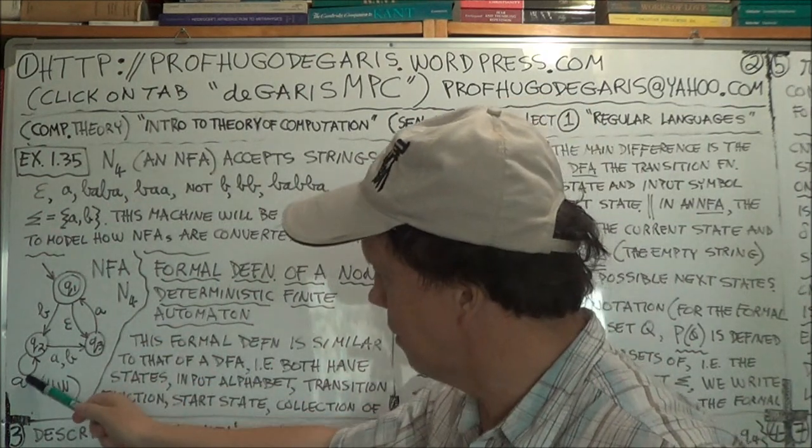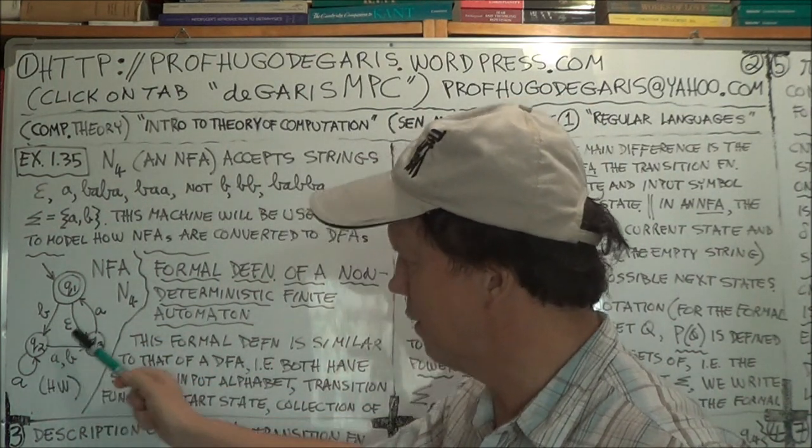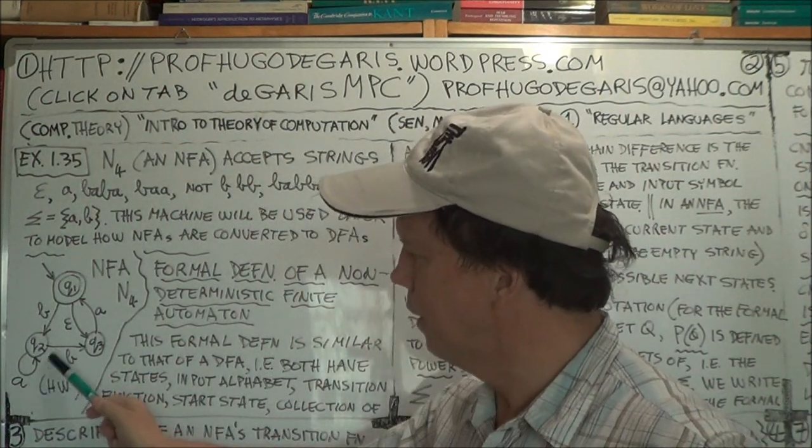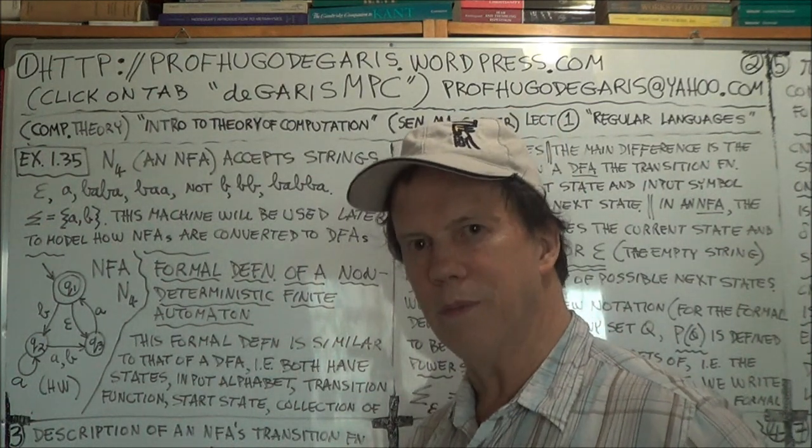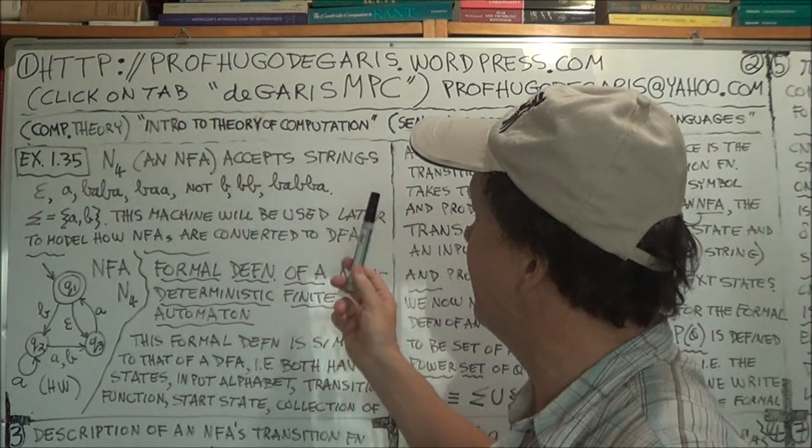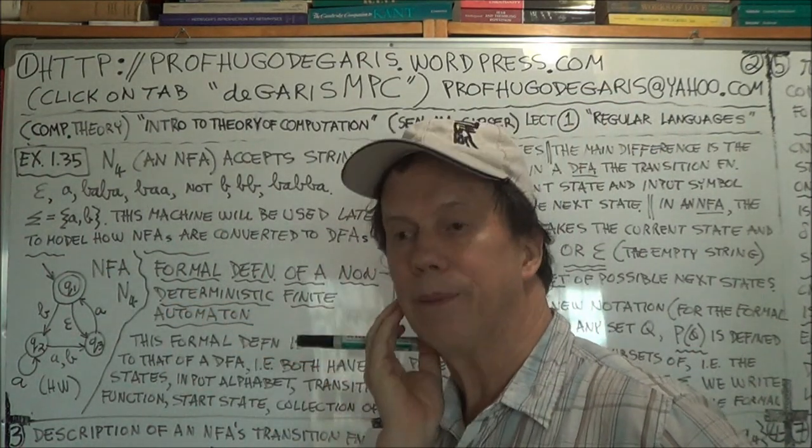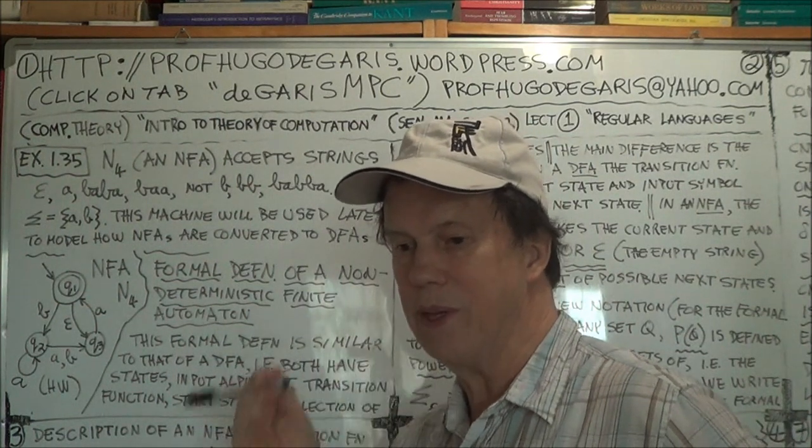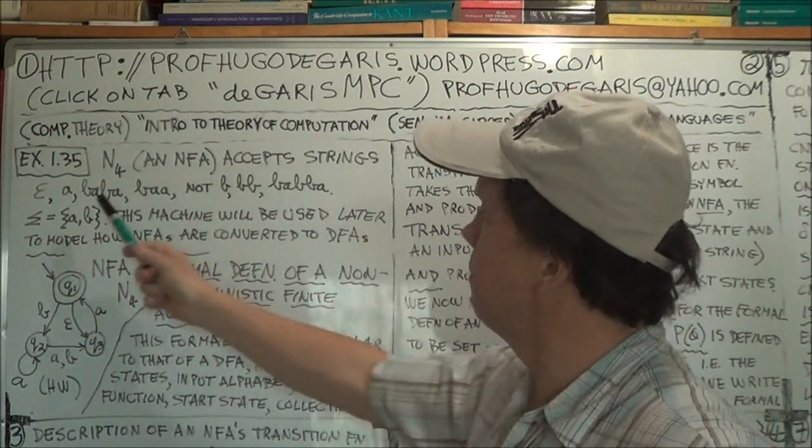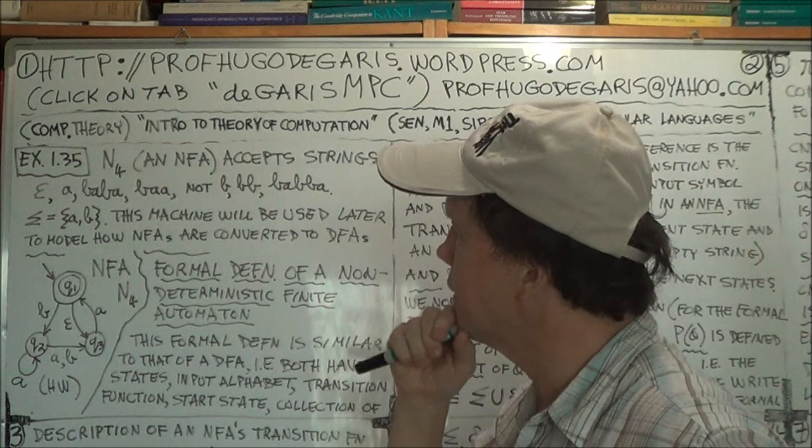So now notice the eta, and notice there are two exit arrows, two transitions here, both from the same state and both labeled with the same input symbol, in this case A. Alright, so the alphabet is just AB. So it's a binary alphabet. Now here's some examples of strings that it accepts. Let's analyze that a little bit.